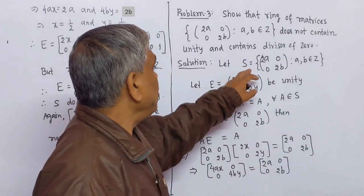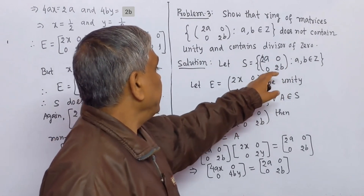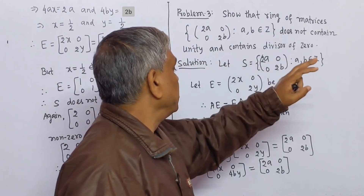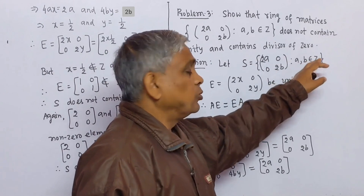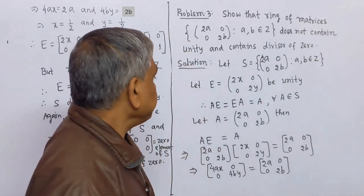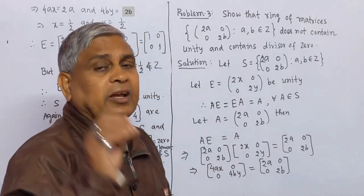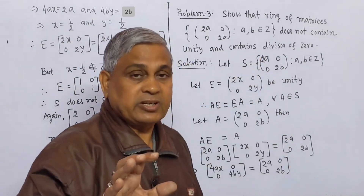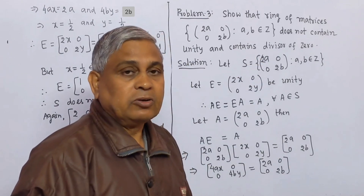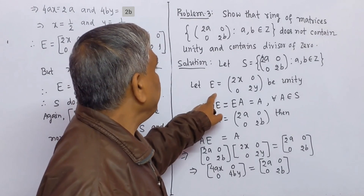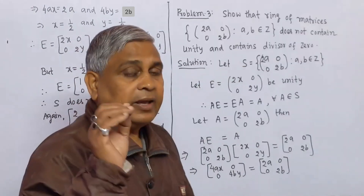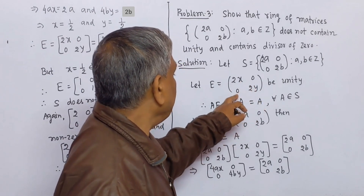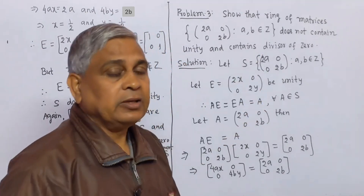Let S be the collection of 2-by-2 matrices whose diagonal entries are of the form 2a, 2b and non-diagonal entries are 0, where a, b belong to Z, the set of integers. Let e be the unity. We do not know whether e belongs to S or not, but we assume e to be unity. If e belongs to S, then e will be of the form with diagonal entries 2x, 2y and non-diagonal entries 0, 0. Let this be the unity.